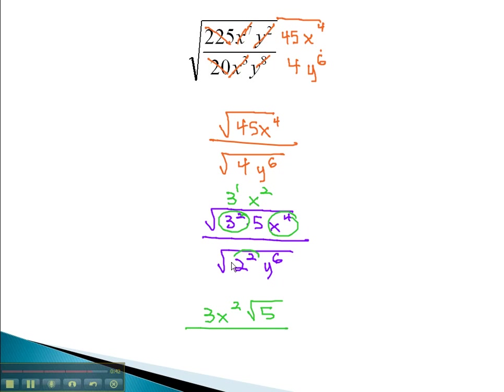In the denominator, 2 squared can come out as 2 to the 1st, and y to the 6th can come out as y cubed. With no radical left, the denominator is 2 y cubed, for our final solution.